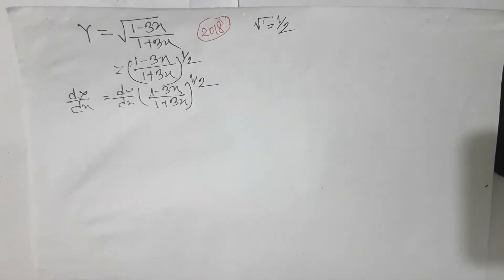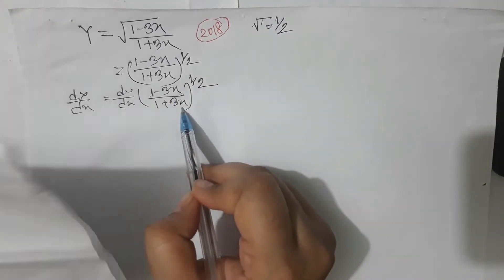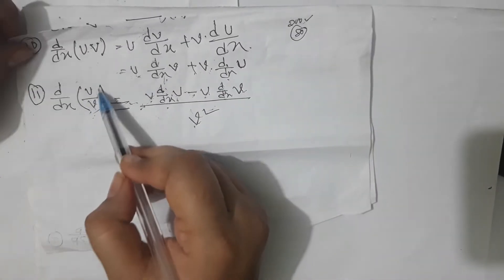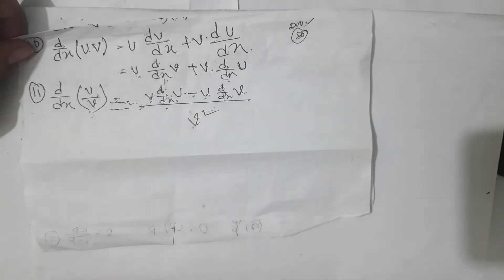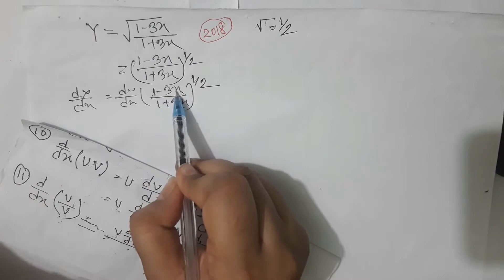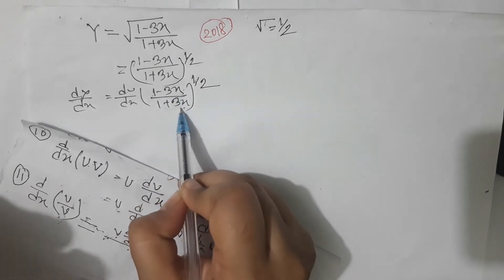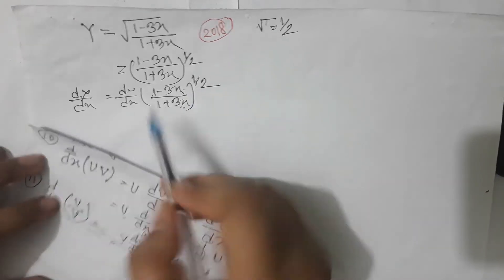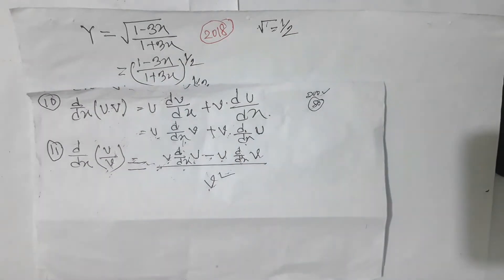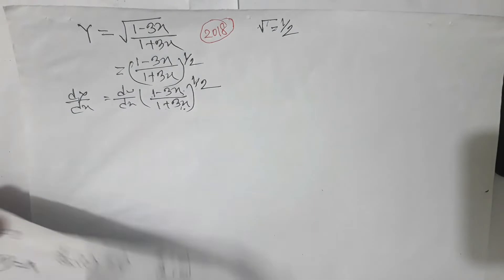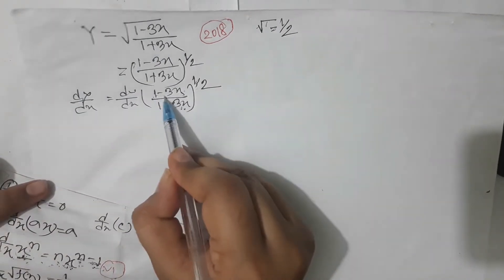Now you can see u is set. So (1 − 3x)/(1 + 3x): between 1 − 3x and 1 + 3x we can say — so what comes at x? Given that 1 − 3x, we can see the given value of x.